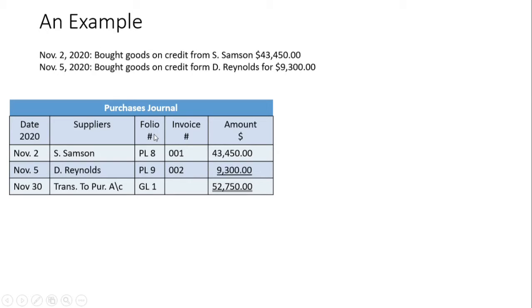We have the folio column, which shows the cross-reference between the journal and the ledger. In the folio column we would know where to find S. Sampson's account in the purchases ledger. Here we have PL, which stands for purchases ledger, and the page number in the purchases ledger is 8. Then we have the invoice column — every invoice normally carries a number, called the invoice number, and it helps with record keeping. The invoice number goes right here; for practicing purposes we can make up the invoice number, so I have 001. The last column is the amount column, where you put the amount of money.